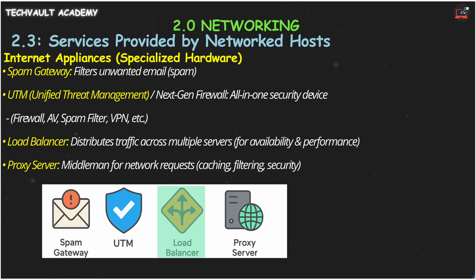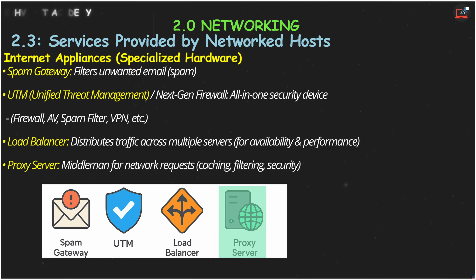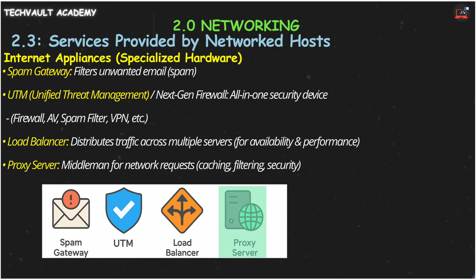When a website gets super popular, load balancers act as traffic directors. They distribute incoming requests across a farm of identical servers, preventing overload and keeping the service snappy and available. Proxy servers are network middlemen. Your device sends requests to the proxy, which then fetches the information on your behalf, often caching content for speed or filtering it for security before sending it back to you.